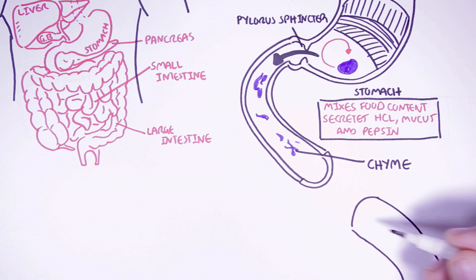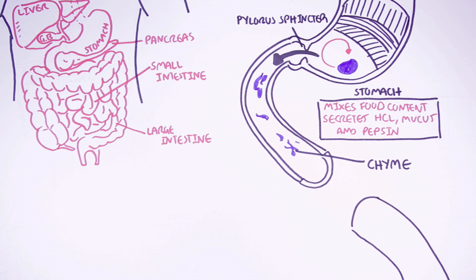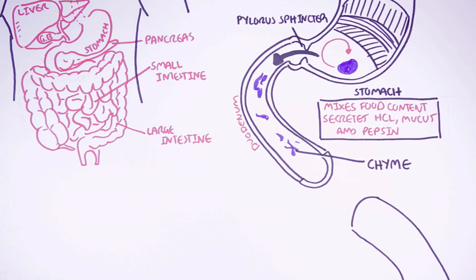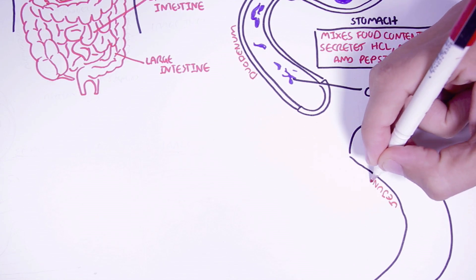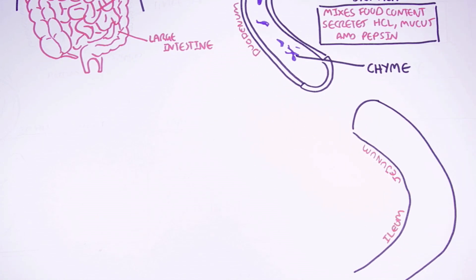The small intestine runs from the pylorus to the ileocecal valve, which where it joins to the large intestine. The small intestine is divided into three segments: the duodenum, the jejunum, and ileum. The ileum connects to the start of the large intestine here.